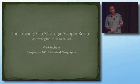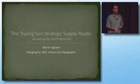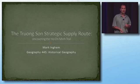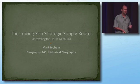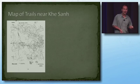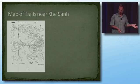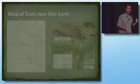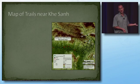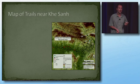Another student did least-cost path analysis on what we commonly refer to as the Ho Chi Minh Trail. It wasn't just one trail — it was a very complex network. This student digitized all the information from a hard copy, transferred it into digital format, and created a full GIS database. More detail can be found on the posters in the other room.